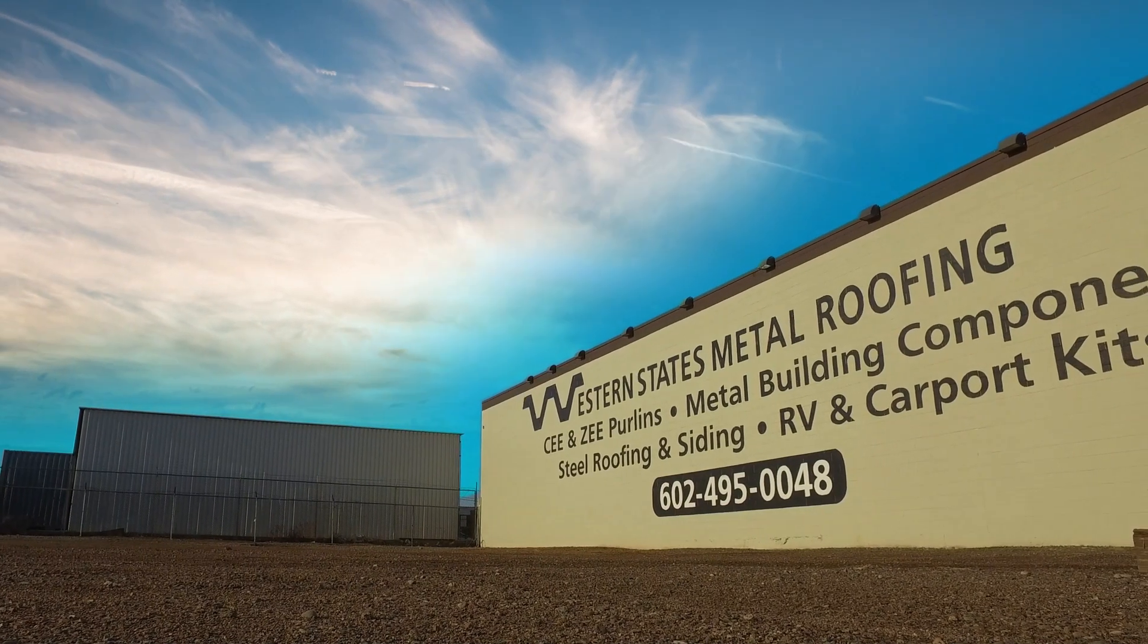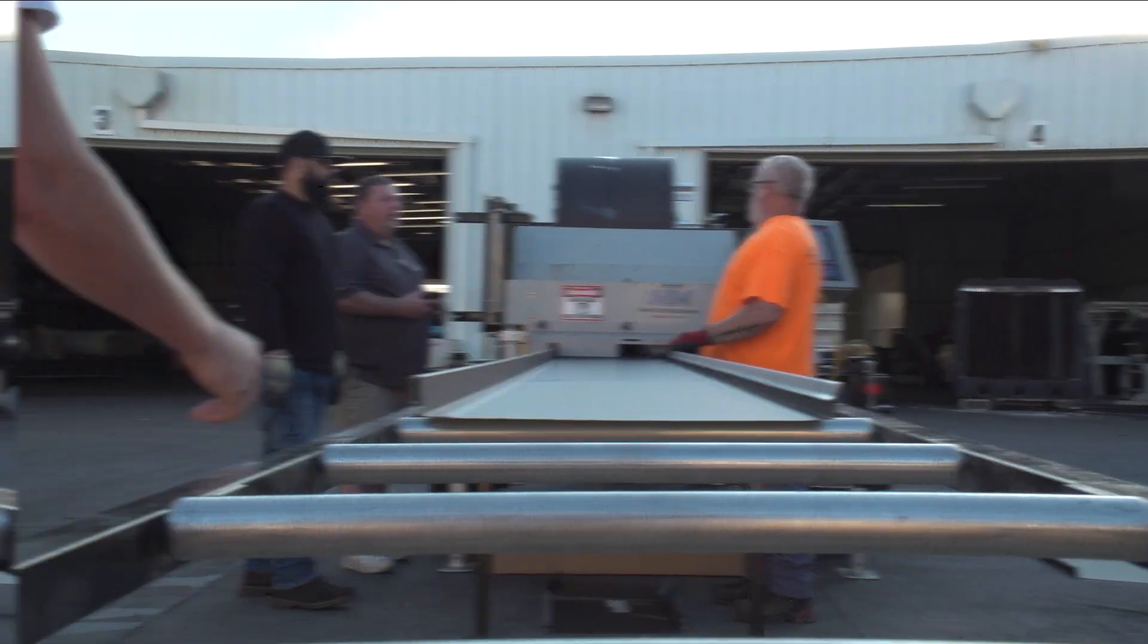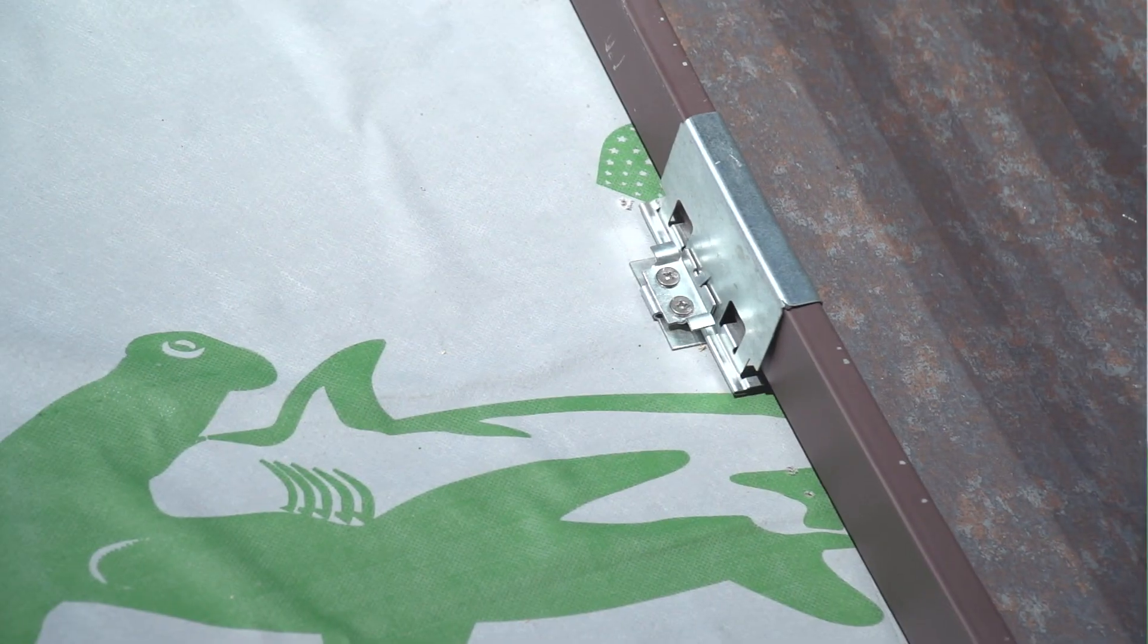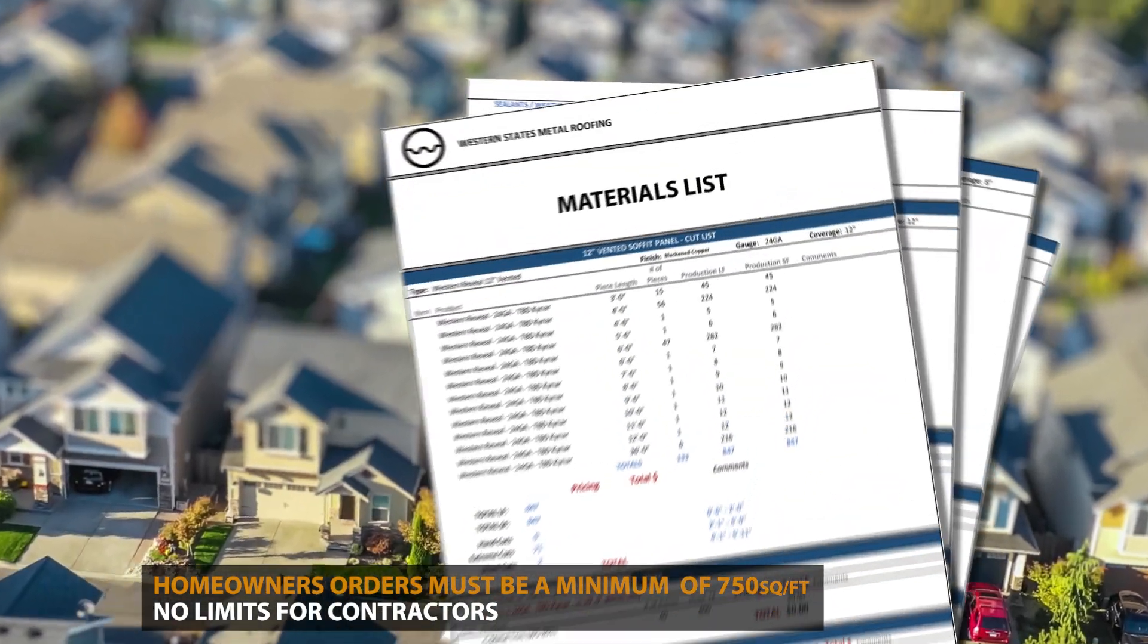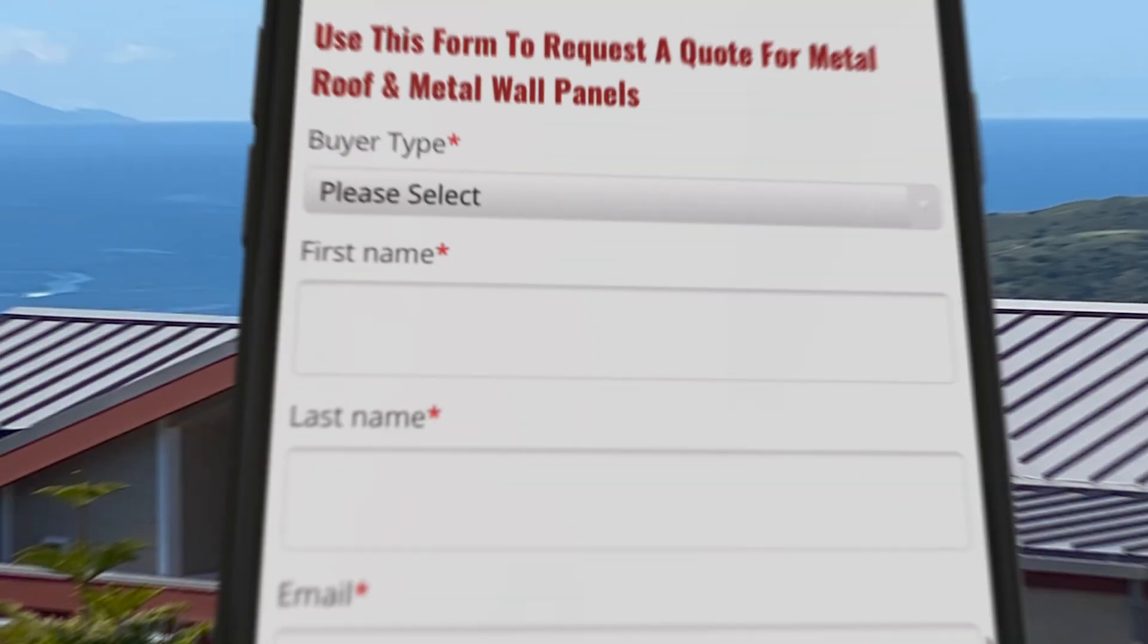Western States Metal Roofing has everything you need for a successful standing seam roof installation, including clips, panels, underlayment, and more. If you have a materials list and know what your project requires, request a free quote today.